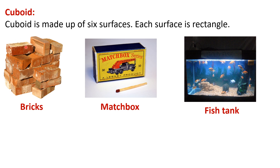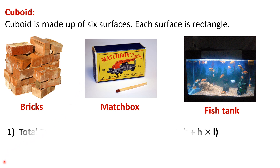Each surface of a cuboid is a rectangle. It is made up of six surfaces: front, behind, top, below, and two sides. These are examples of cuboid. To find the total surface area means finding the total outer area — you have to find the area of all six surfaces.